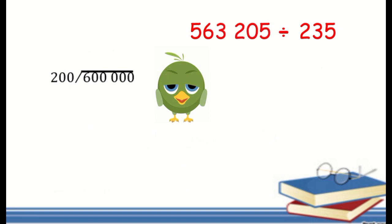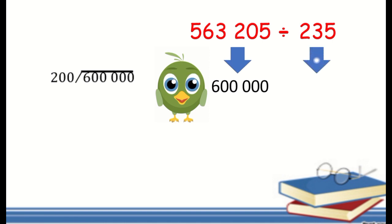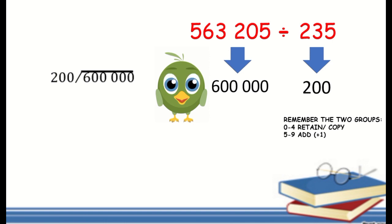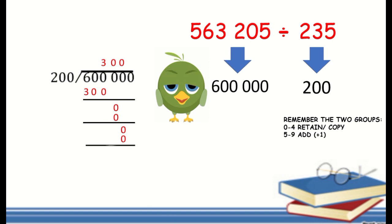Example number 2: 563,205 divided by 235. The greatest place value digit of 563,205 is 5. The digit to its right is 6, which belongs to the 5–9 group, so we add 1: 5 becomes 6. For 235, the greatest place value digit is 2, and the digit to its right is 3, which belongs to the 0–4 group, so we retain 2. After rounding, 563,205 becomes 600,000 and 235 becomes 200. Using the long division method fast-forwarded, we get a quotient of 300.